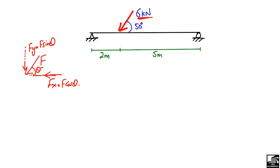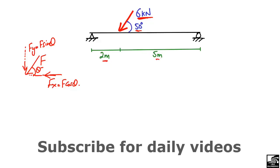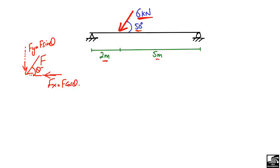In our problem we have a load of 6 kN inclined at an angle of 50 degrees. There is a distance of 2 meters from the left support and 5 meters from the right support. We call the left support A and the right support B.